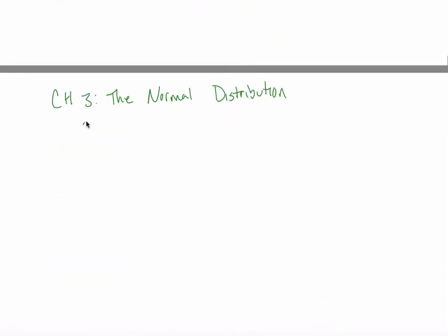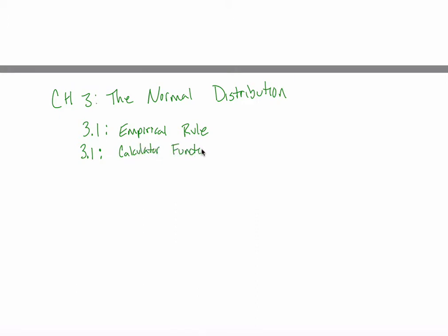In chapter three, we're talking about the normal distribution. In 3.1 there's a ton of information, so I split it up into two different parts. First, we're going to talk about the empirical rule. This is one of the mathier things we'll talk about in this class, and it tends to be the first topic that a subset of students struggle with a little bit. We'll go through it slowly, I'll give you extra practice if needed, and I'll show you a couple of different methods. Then we'll talk more about 3.1 — we're going to be using different calculator functions that I'm going to teach you.